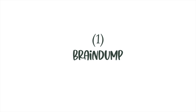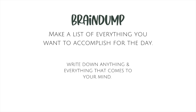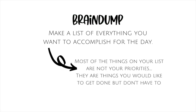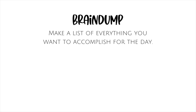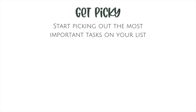Step number one is to brain dump. Make a list of everything you want to accomplish for the day — just write down anything and everything that comes to mind. This is a no-judgment zone; it's not the time to decide whether you're going to do something today or next week. Just jot it all down, get it out of your brain and onto paper. Keep in mind that most things on this list are not going to be your priorities.